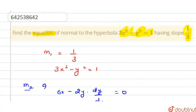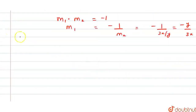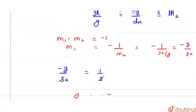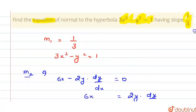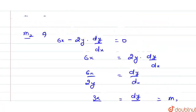M1 is given as 1/3. So equating both values: -y/3x = 1/3. The 3s cancel, giving y = -x. This point of the normal will satisfy this equation, and it will also satisfy the equation of the hyperbola.